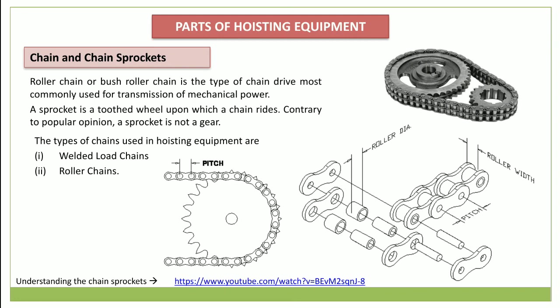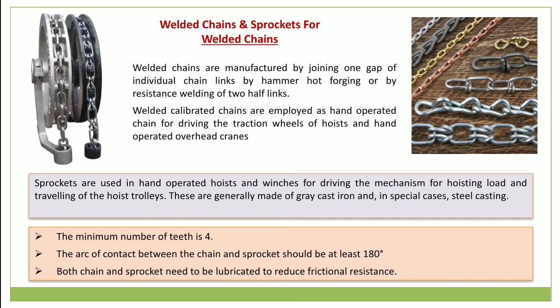Welded chains and the sprockets used for welded chains are a very important part for hoisting machines. They are basically used in low-capacity hoisting machines like hoists, winches, and hand-operated equipment as the main lifting appliance, as slings for suspended loads from hooks, and other lifting attachments. These welded calibrated chains are employed as hand-operated chains for driving traction wheels of hoists and hand-operated overhead cranes. They are manufactured by joining individual chain links by hot forging or by resistance welding. Resistance-welded chains are the most accurate and have increased strength.